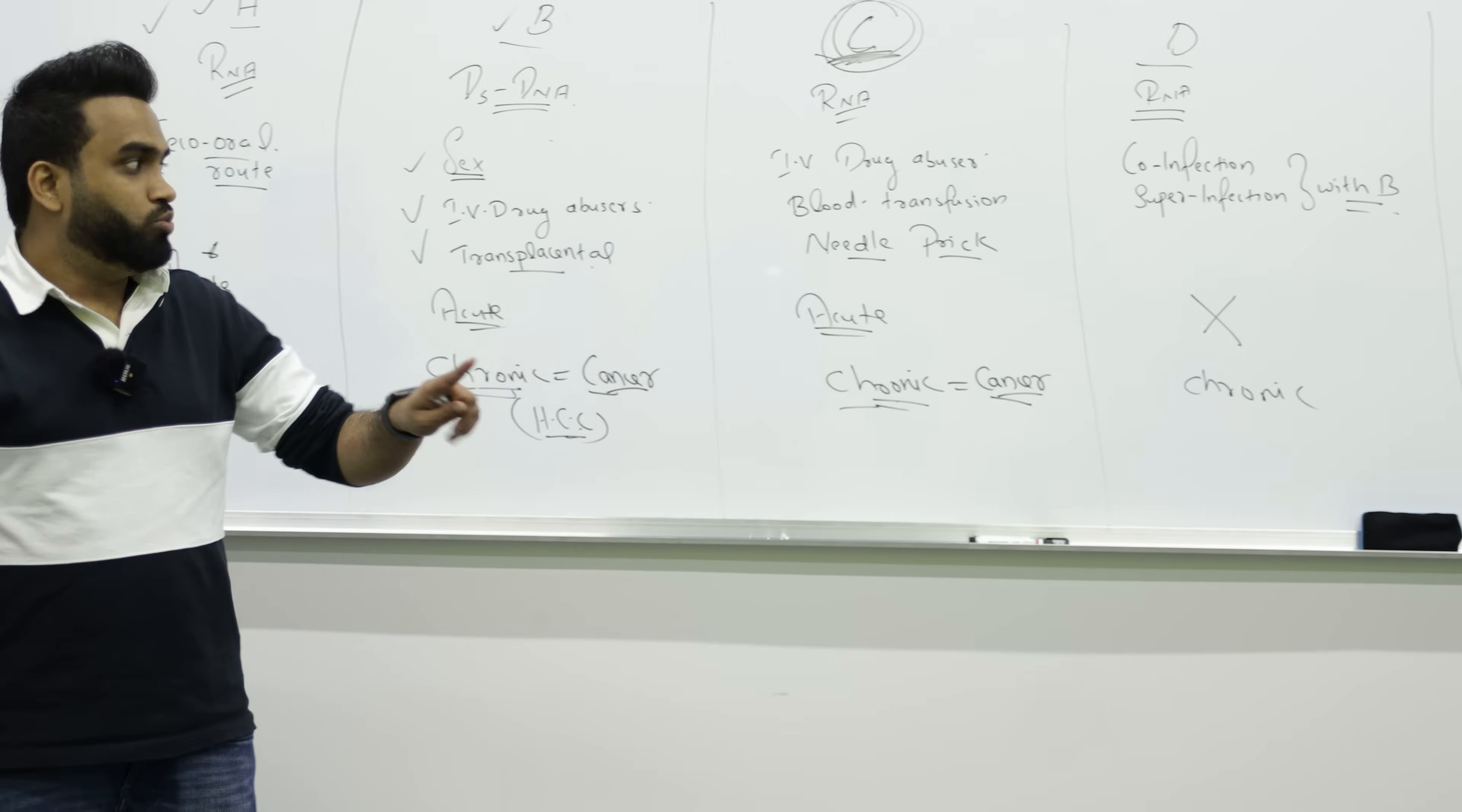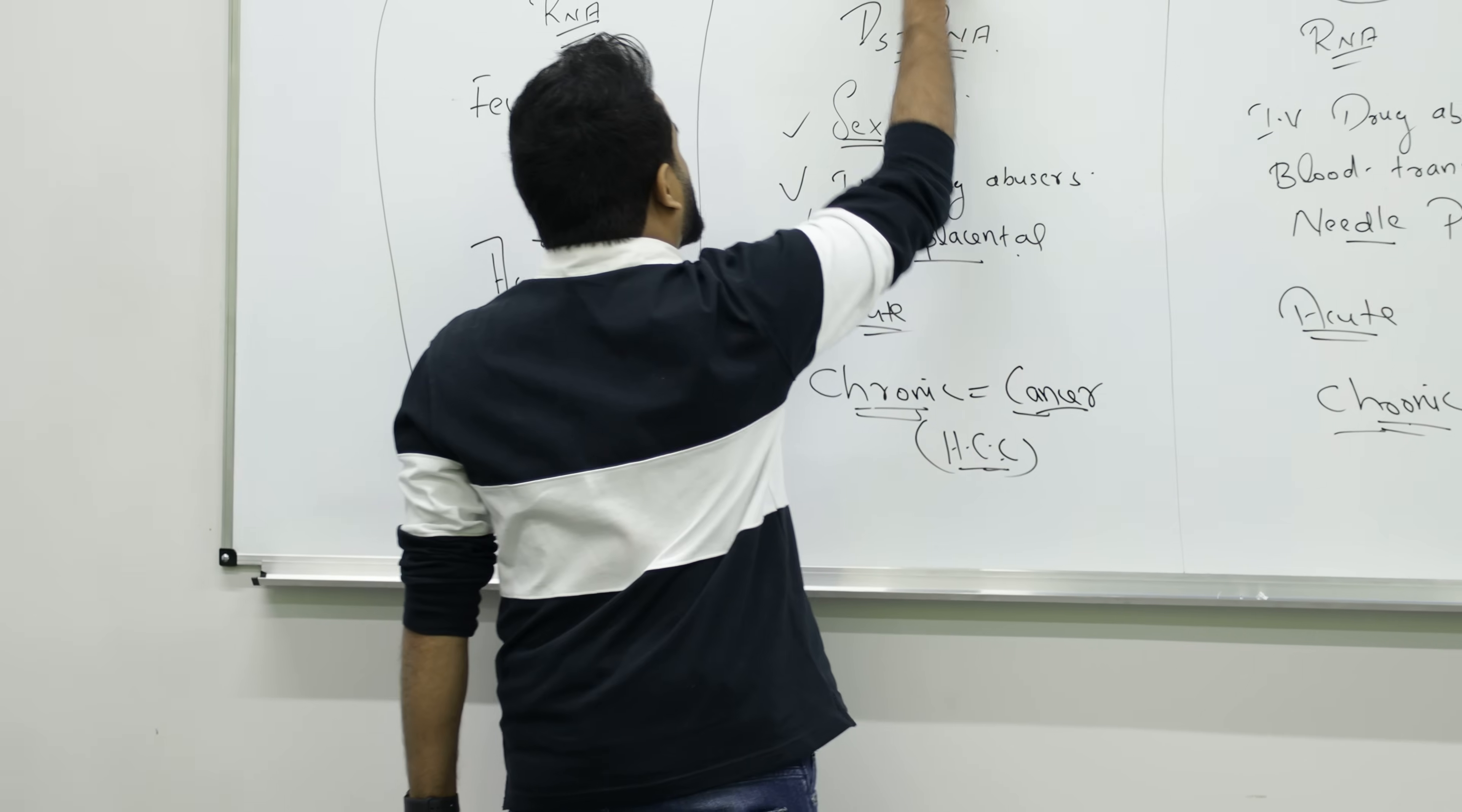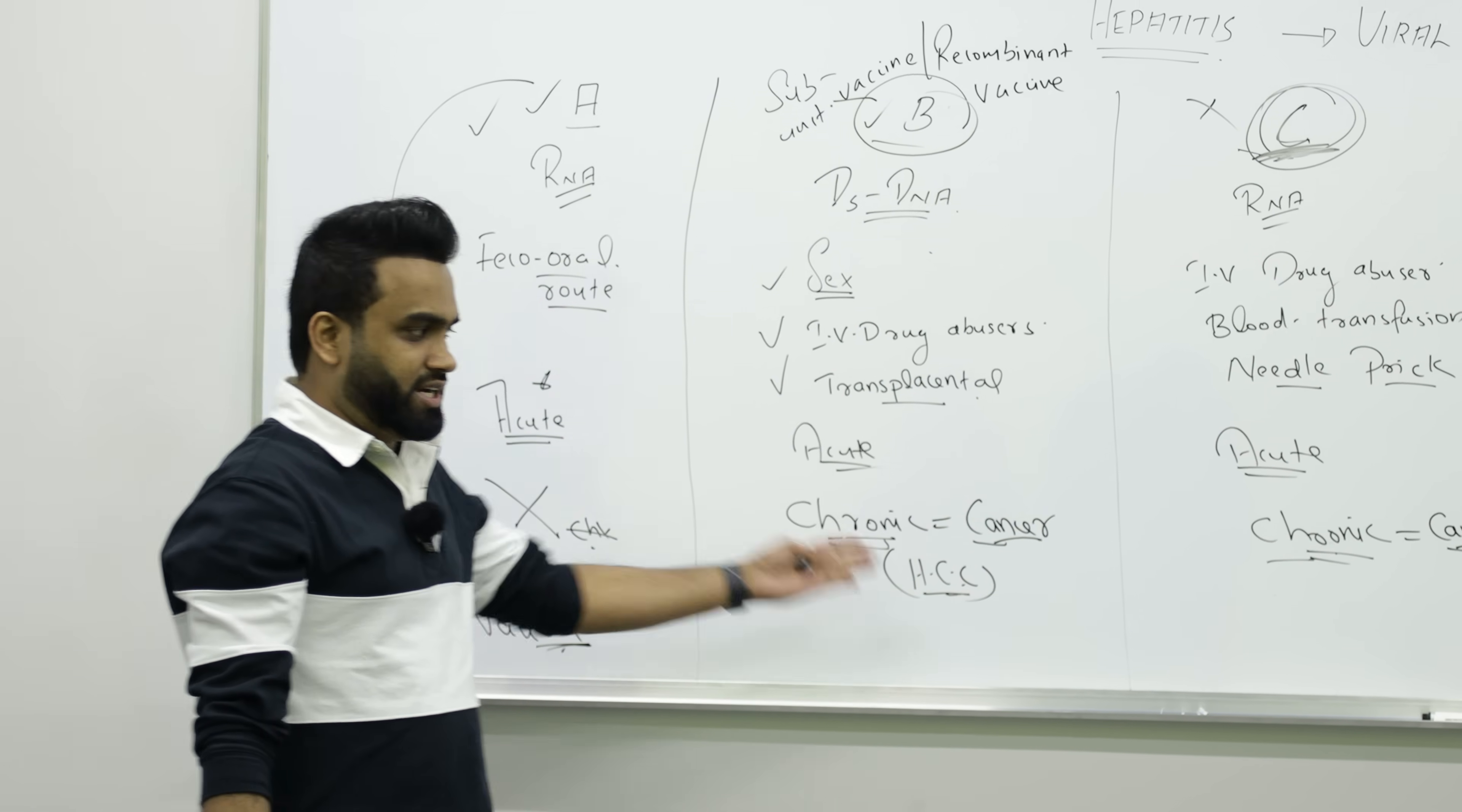How we prevent them is by giving vaccination. For hepatitis A, we have available vaccine called inactivated vaccine. Hepatitis B has a vaccine called subunit vaccine. C doesn't have any vaccine. Subunit is also called recombinant vaccine for hepatitis B. C doesn't have any vaccine, so we can't prevent it for now.